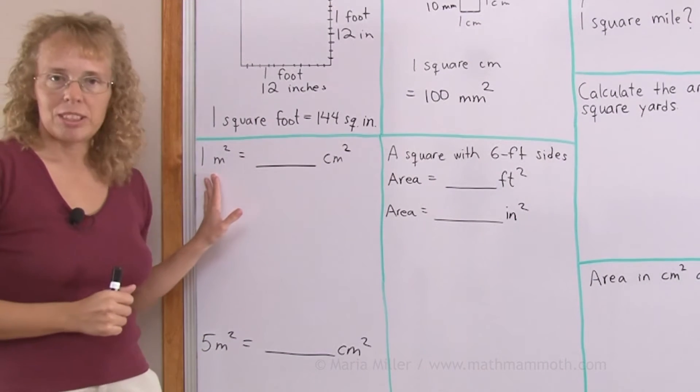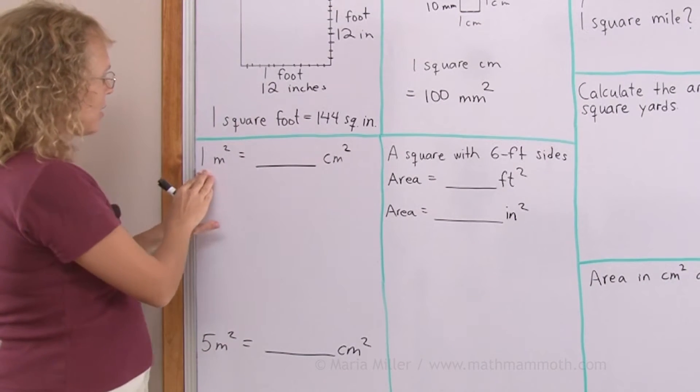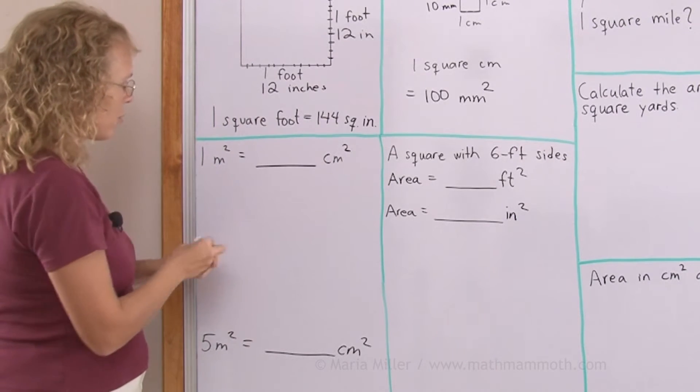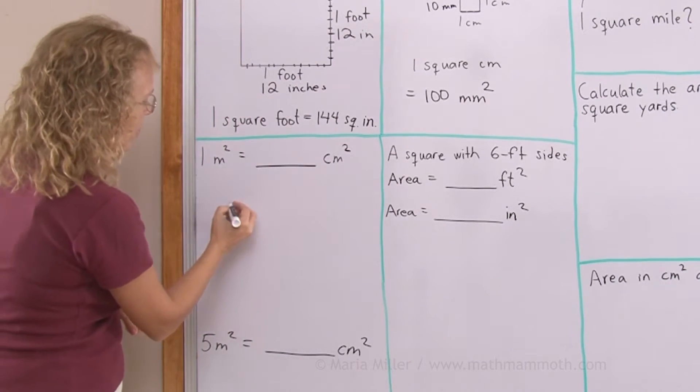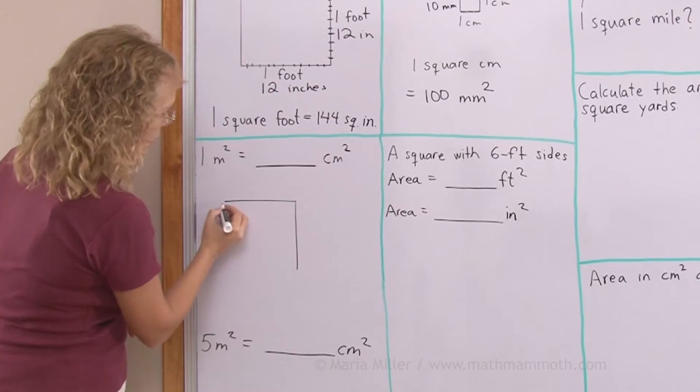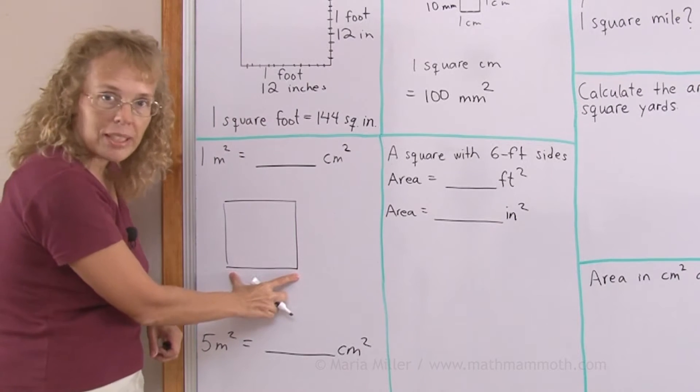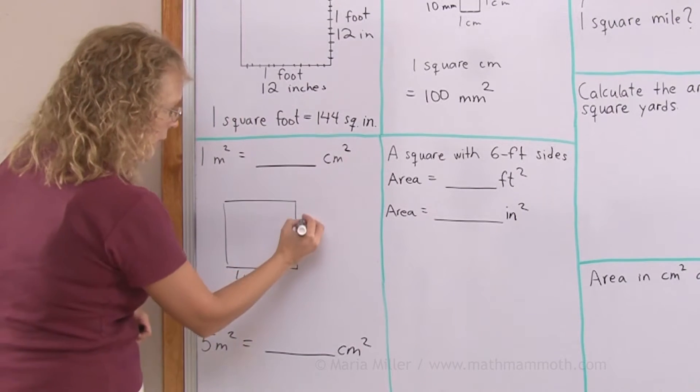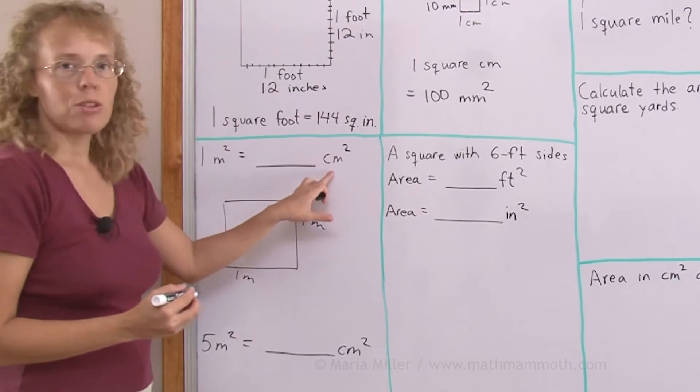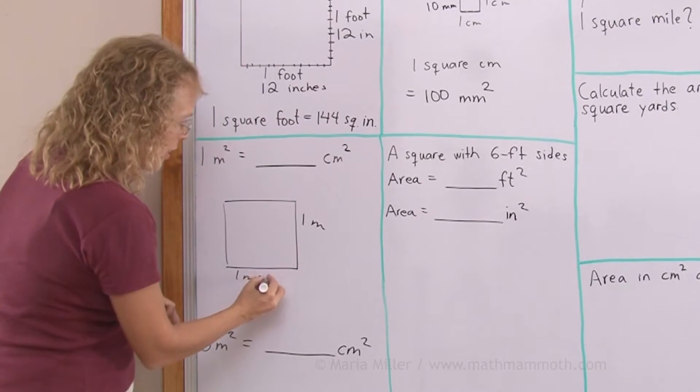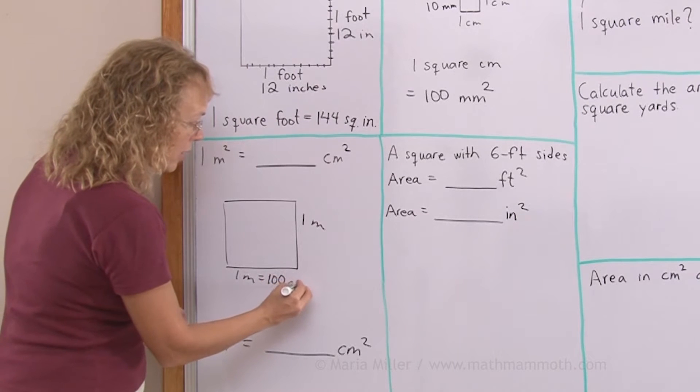Here we will use the same principle. We are asked, how much is one square meter in square centimeters? I'm going to draw one square meter here. If this is my one square meter, it means that this side is one meter. But since we need to go to square centimeters, let me think also how many centimeters is the side. It is, as you know, 100 centimeters.